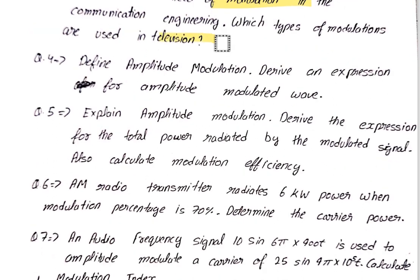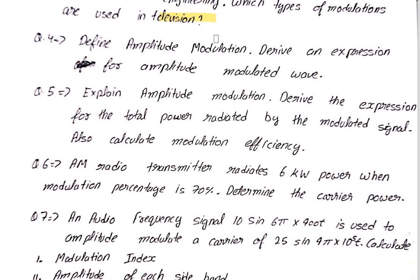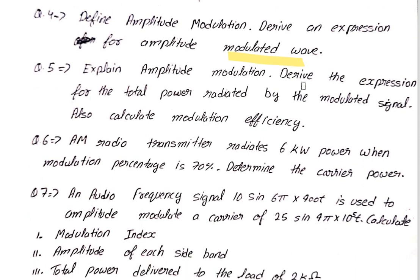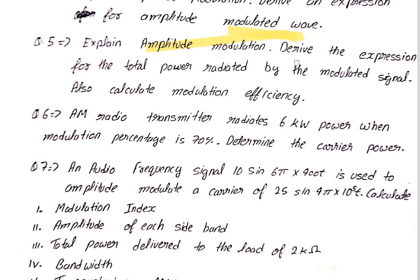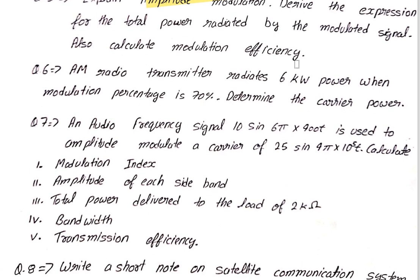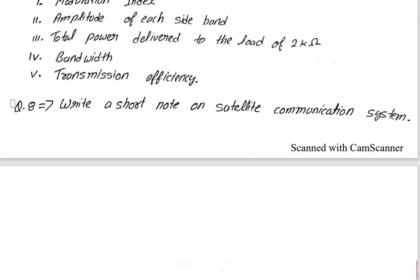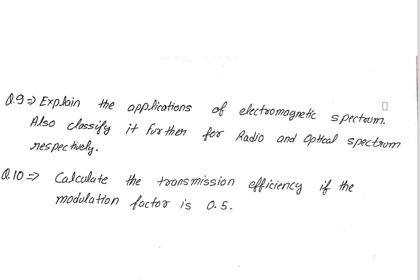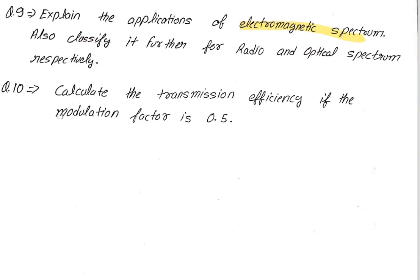Study amplitude modulation — what it is, the wave expression for amplitude modulation, derivation of expression for total power of the modulated signal, and modulation efficiency. That's around question 6 or 7. The last question covers satellite communication systems in wireless communication. Question on electromagnetic spectrum applications, and question 10 is on calculating transmission efficiency.